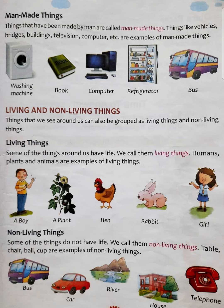Things like vehicles, bridges, buildings, television, computer, etc., are examples of man-made things. Aap dekh sakte hain ki yeh sabhi man-made things ke examples hain — kaunse: vehicles yani gaadiyaan, bridges yaani pull, buildings, television, computer. Yeh sab cheezein hain jo ki machines hain, insaan ne banayi hain.